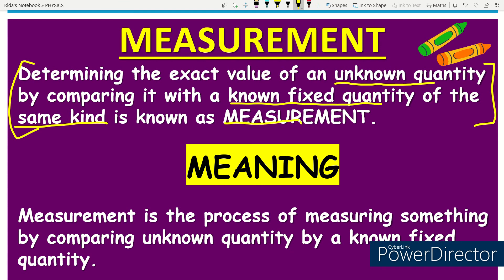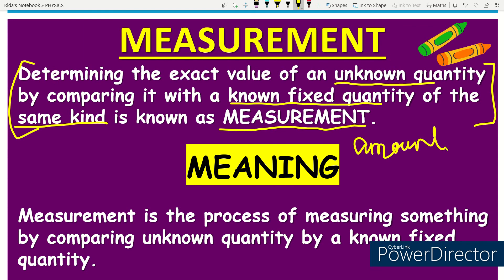When we compare an unknown quantity with a known fixed quantity, we call that process measurement. An unknown quantity is something we don't know the amount of — for example, if you go to buy vegetables, you don't know how much it is. When we measure it, we get to know it. We then compare it with a known fixed quantity, which is the unit.